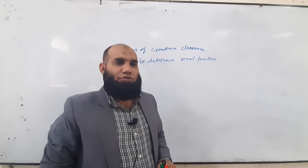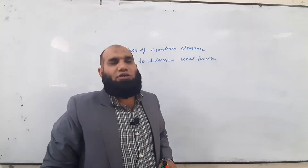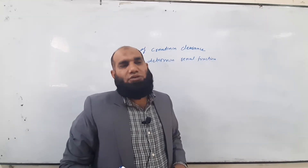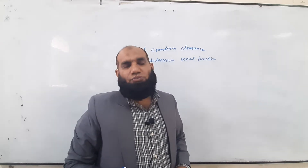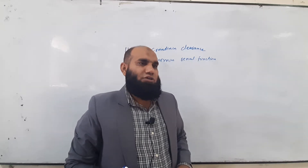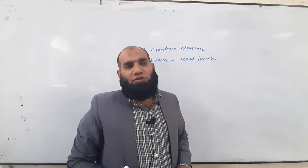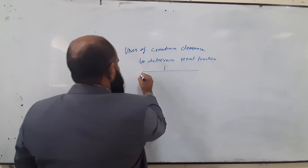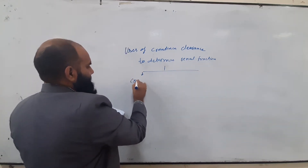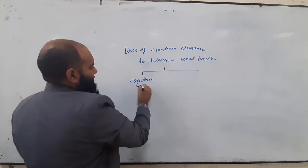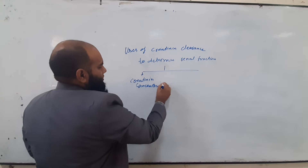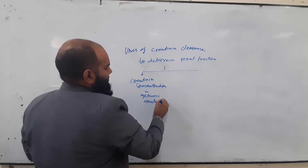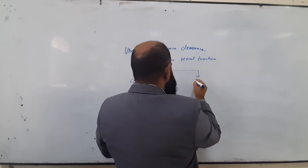We check the efficiency of any organ using the concept of clearance by using creatinine and inulin. Both of these muscle byproducts are used to check their values in two ways: one is their presence in the systemic circulation — the creatinine concentration in systemic circulation — and the other is creatinine clearance.